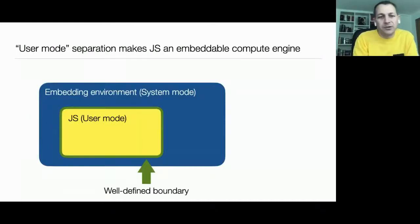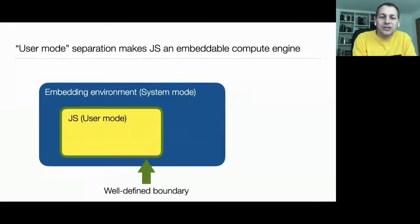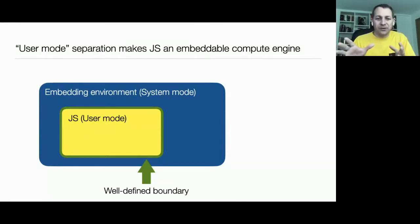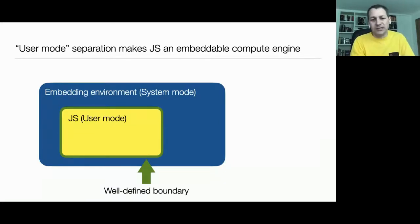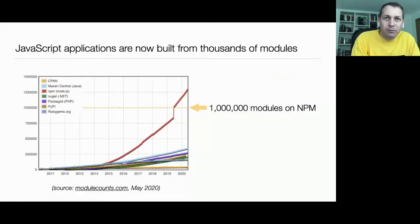Because of this split, the JavaScript standard is very explicit about what is part of the language and what is part of the host environment. This ensures JavaScript has a well-defined boundary between language and host, and that property is also what enables us to now see JavaScript in so many different embedding environments — the browser was the original, but now we see it on the server, in embedded devices, and so on.